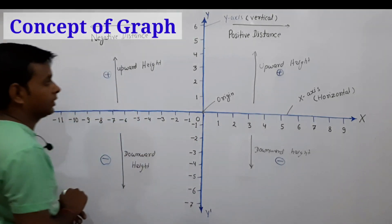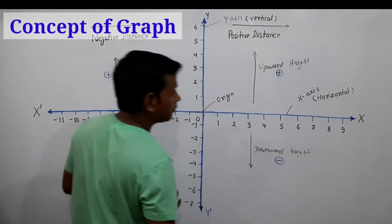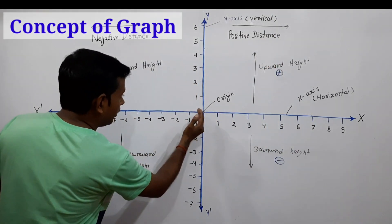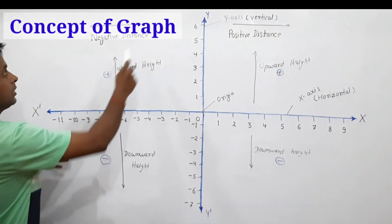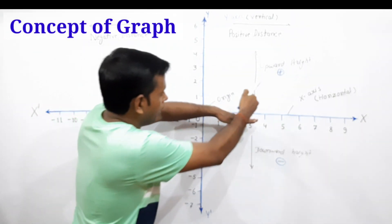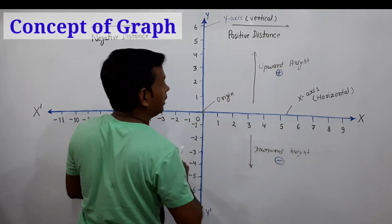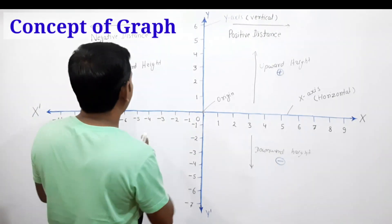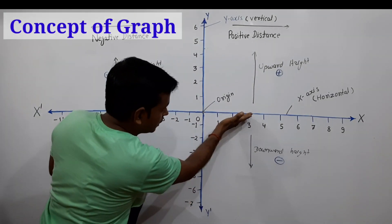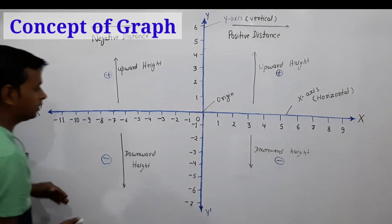The horizontal line is known as the x-axis, whereas the vertical line is known as the y-axis. If we move from the origin to the right side of the horizontal line, it is taken as a positive distance. Similarly, when we move left from the origin along the x-axis, it is taken as negative distance. When we move upward from the x-axis, it is taken as positive, no matter which side — upward height is always positive, whereas downward distance from the x-axis is taken as negative.